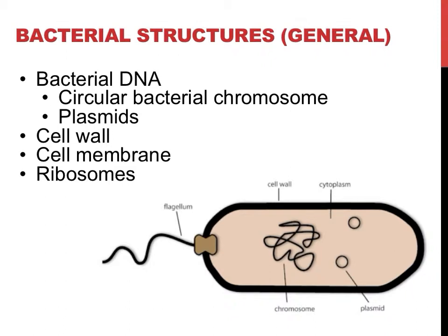Bacteria also contain a cell wall. While other organisms also have cell walls, the cell walls in bacteria are made up of different molecules — this will be described later in more detail. All organisms, including bacteria, contain a cell membrane, which is a selectively permeable membrane allowing certain things in and out. Finally, all organisms, again prokaryotes included, contain ribosomes, structures that are responsible for making proteins.